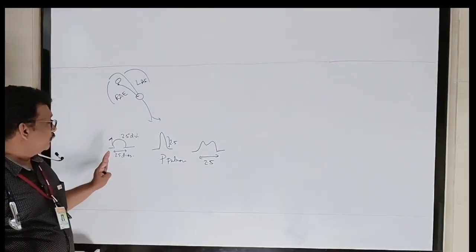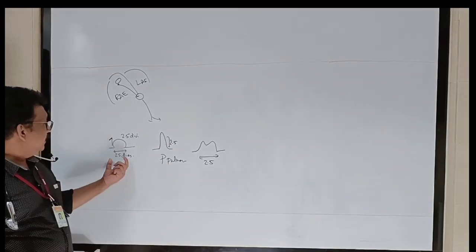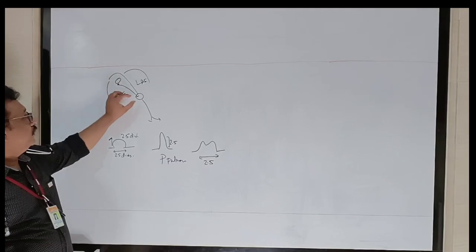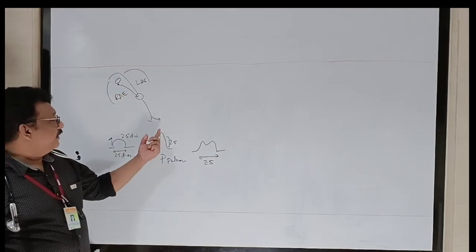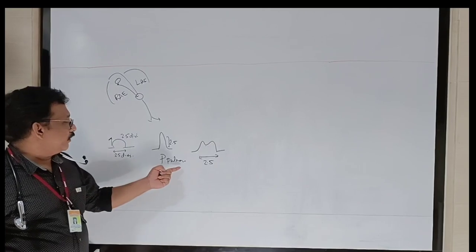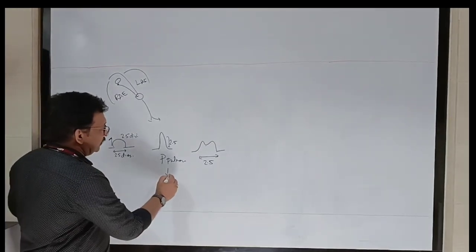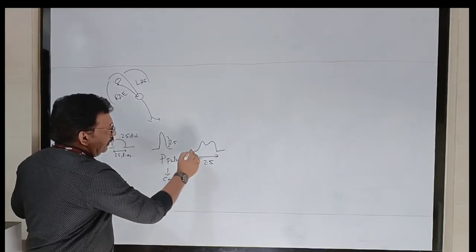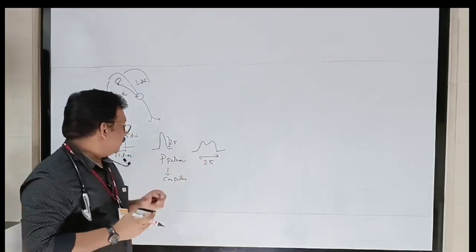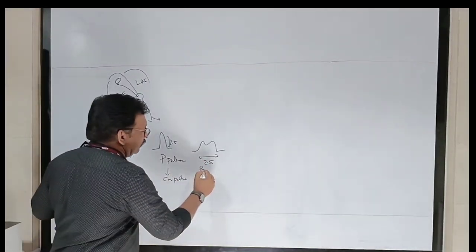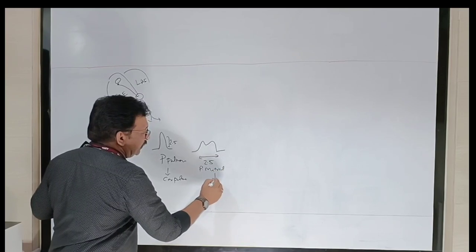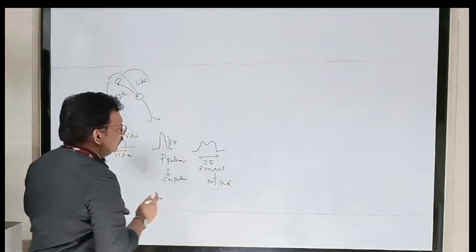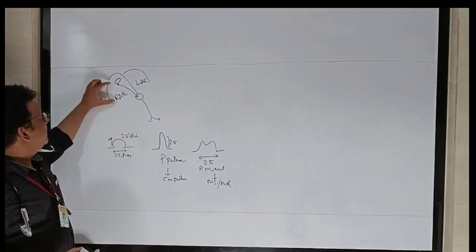To summarize the morphology: a normal P wave has height 2.5 divisions, width 2.5 divisions, originating from the SA node going to the AV node. If the height increases more than 2.5 divisions, it is P pulmonale — classically seen in cor pulmonale. A wide notched M-shaped P wave is called P mitrale, classically seen in mitral stenosis or mitral regurgitation.